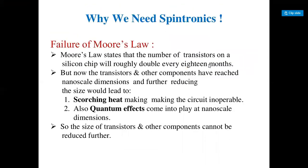Why do we need Spintronics? The answer lies in the failure of Moore's Law. Moore's Law states that the number of transistors on a silicon chip roughly doubles every 18 months. But now transistors and other components have reached nanoscale dimensions, and further reducing the size would lead to excess heat generation, making the circuit inoperable. Also, quantum effects come into play at nanoscale dimensions, so the size of transistors cannot be reduced further.